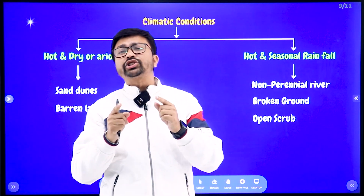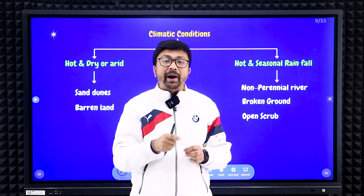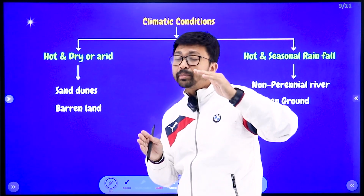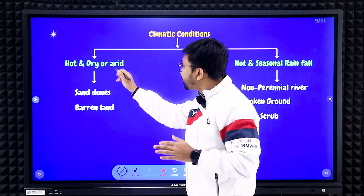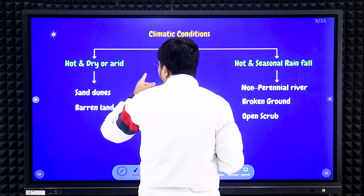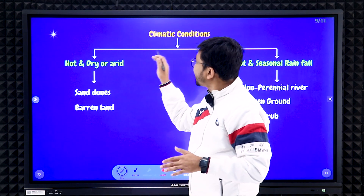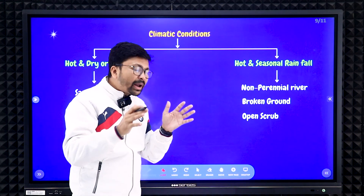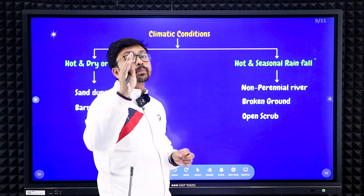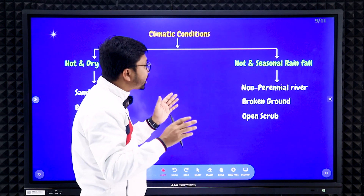Next, climatic condition — a very important question. They will ask you to predict the climatic condition of the given map area and justify it. Generally the map will show a hot and dry or arid or semi-arid area. If you see sand dunes and barren land (white patches), mention it is hot and dry or arid. If you see non-perennial rivers, broken ground, and open scrub, it means there is seasonal rainfall — mention it is hot with seasonal rainfall.